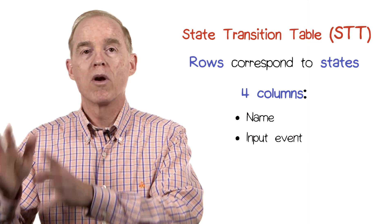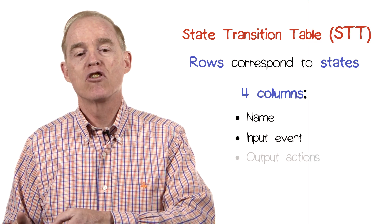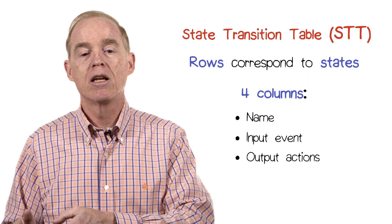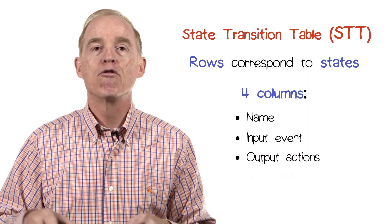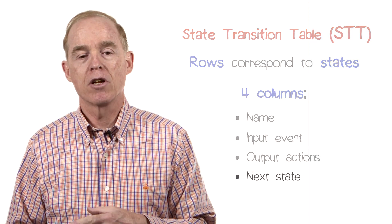The third column is for whatever output action is going to be taken upon the transition, and the fourth for the next state. The state transition table captures the idea that a system in a given state, when given a certain stimulus,